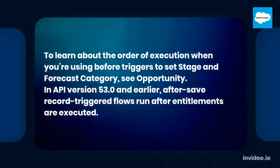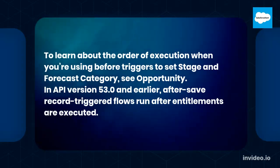In API version 53.0 and earlier, after-save record-triggered flows run after entitlements are executed.